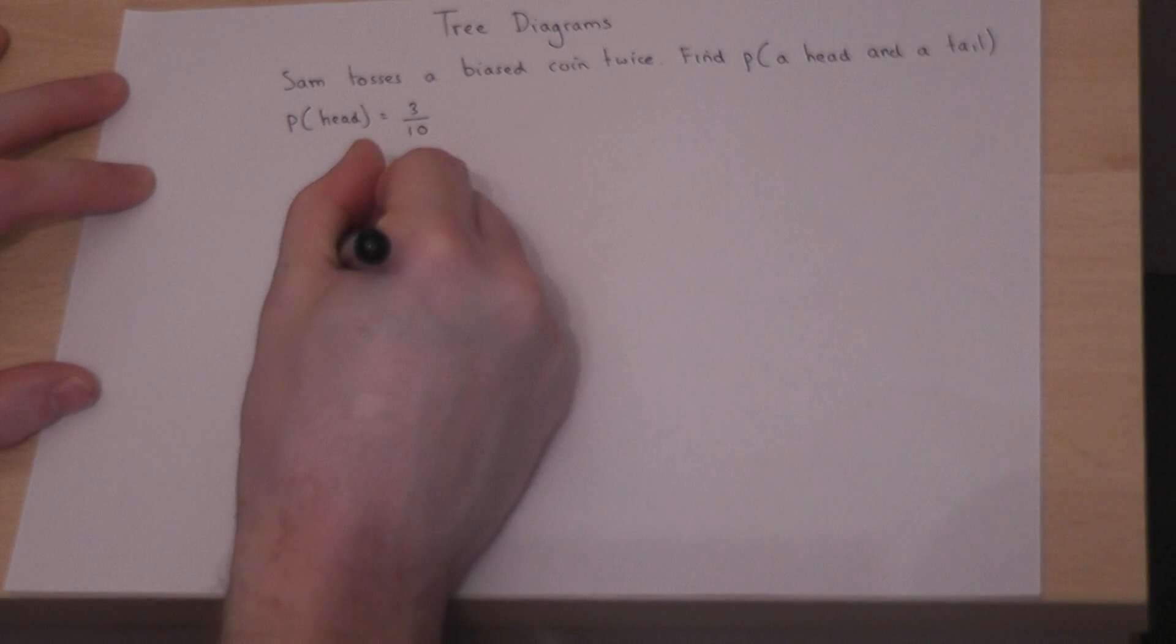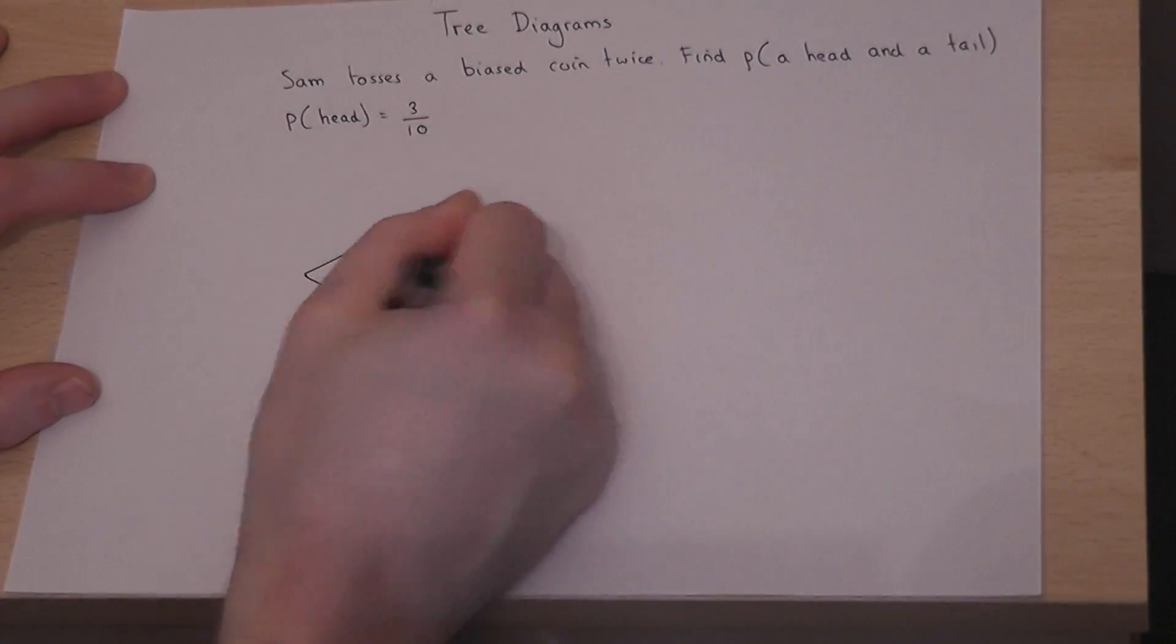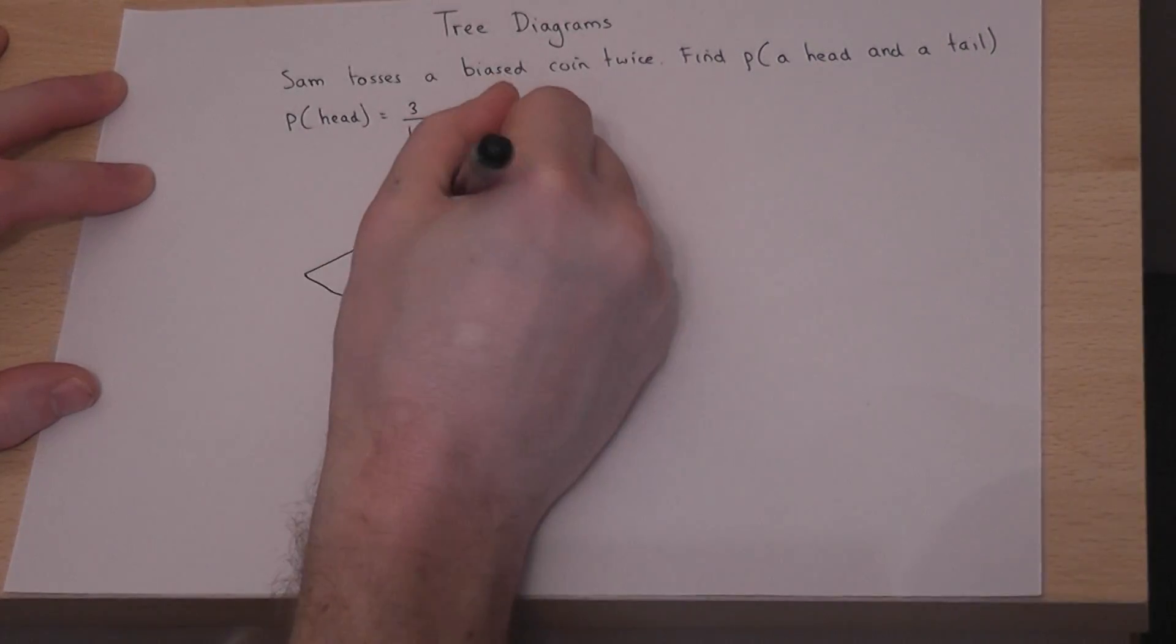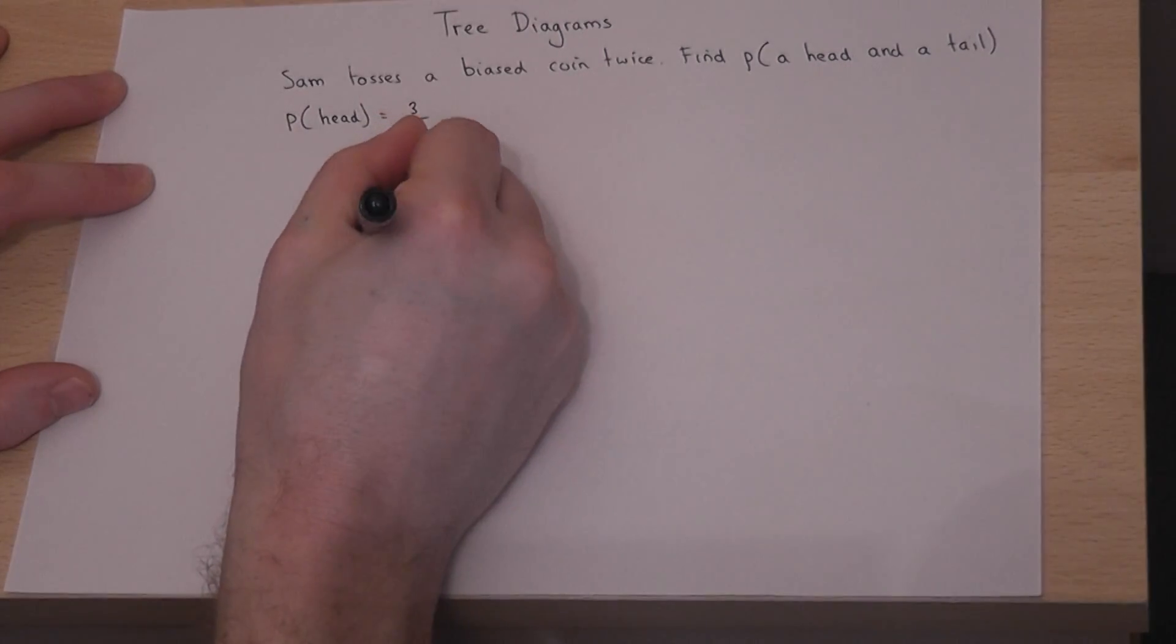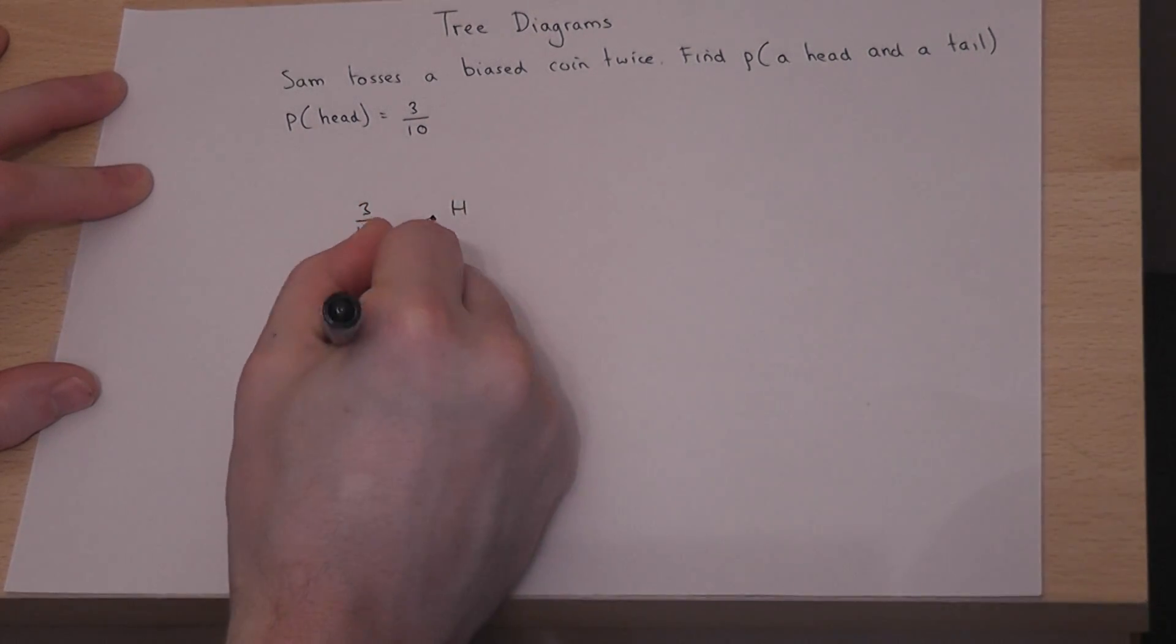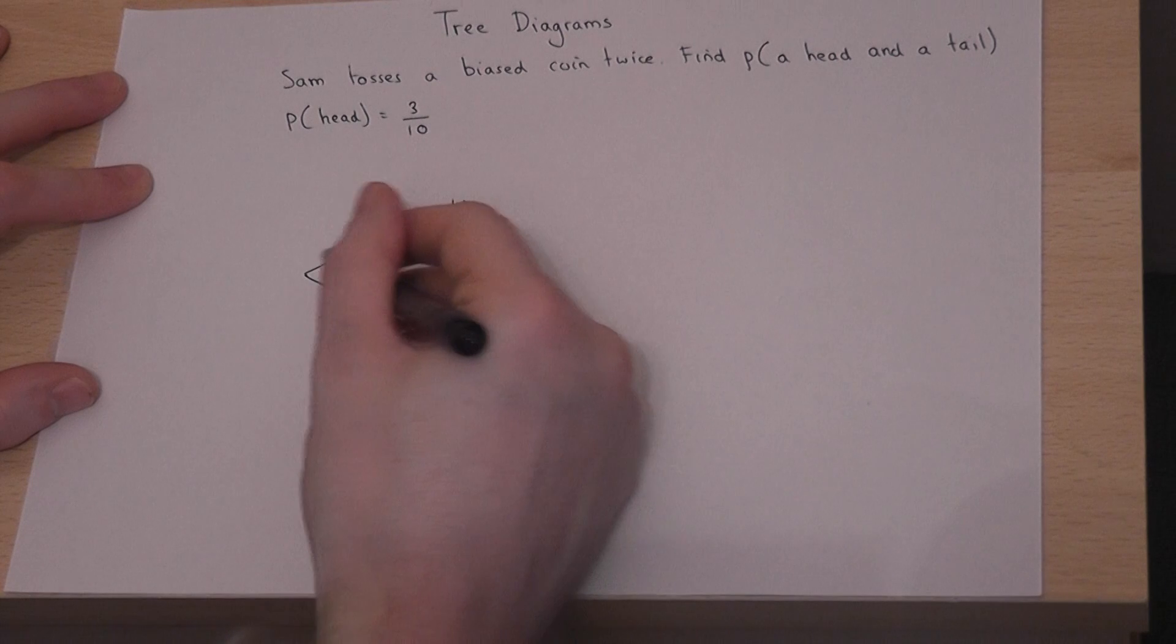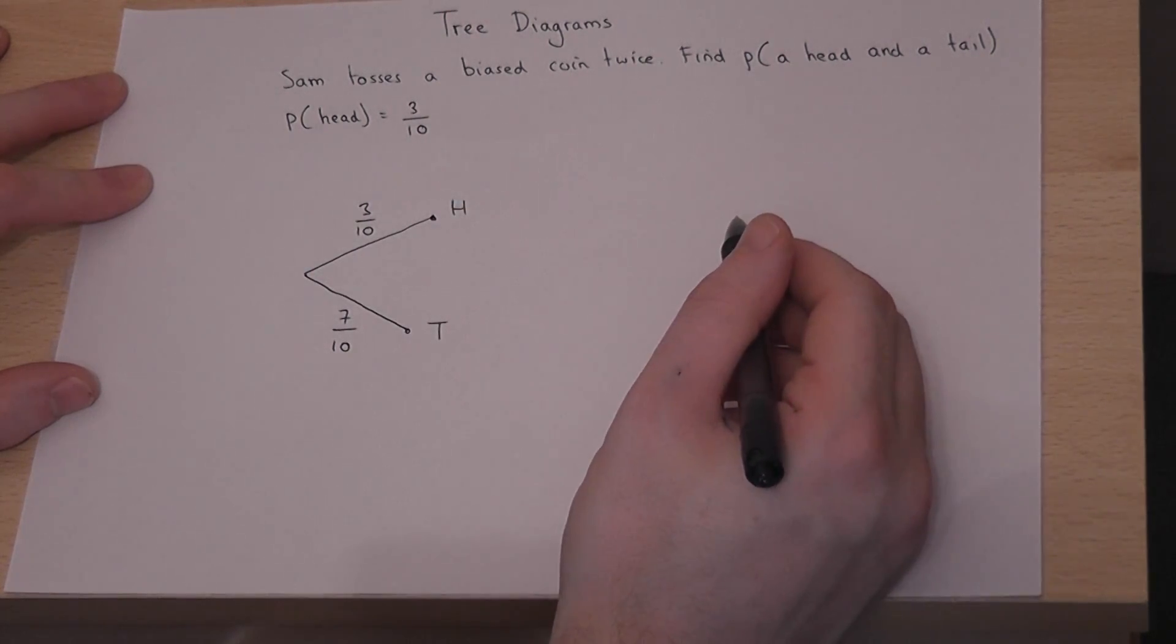So when he first tosses the coin, he could get either a head or a tail, and the chance of a head is 3 tenths, so therefore the chance of a tail will be 7 tenths. That's the first option having tossed the coin once.